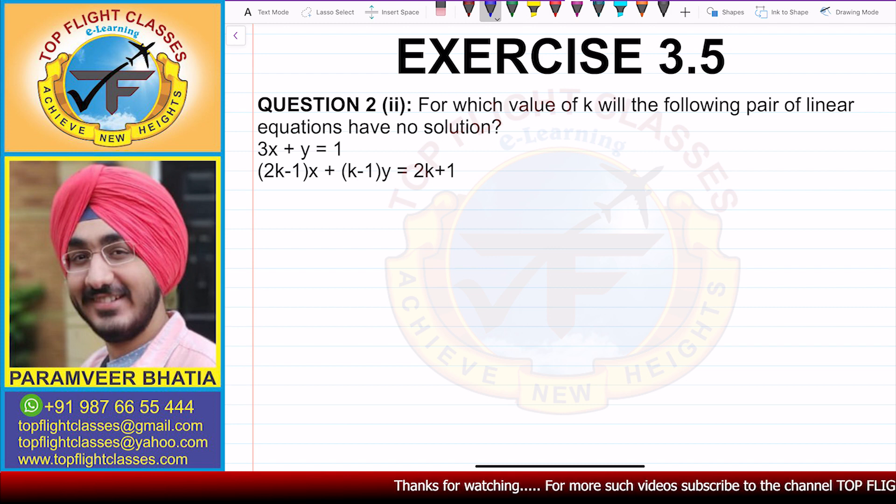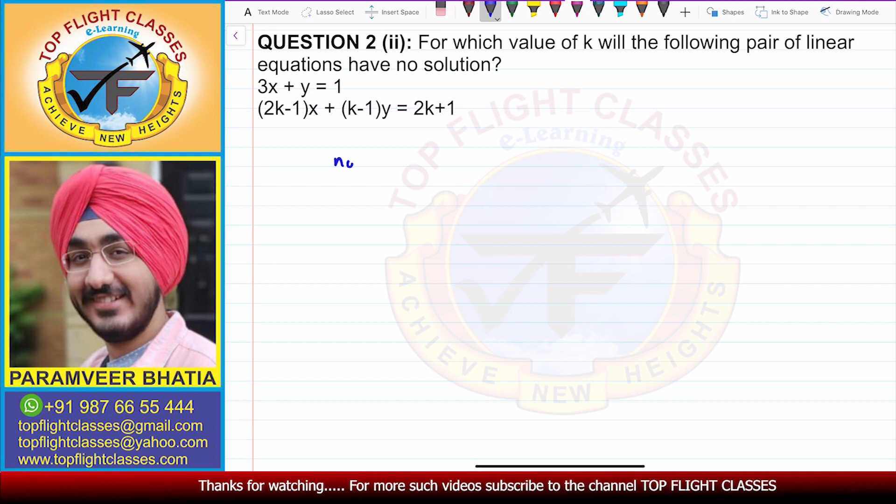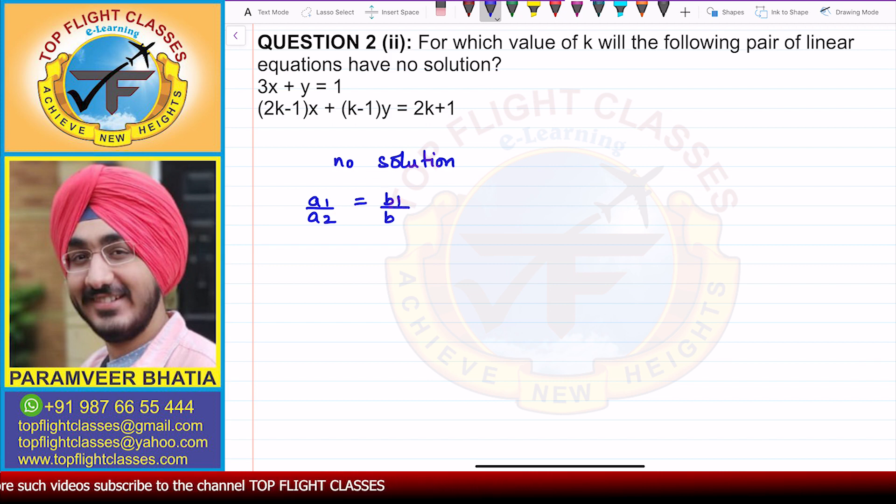Now, it says that the pair of linear equations has no solution. Since it has no solution, the condition that we get from here is that a1 by a2 is equal to b1 by b2, will not be equal to c1 by c2.